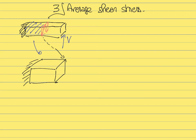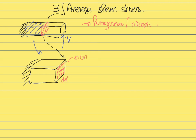Looking at the detail of what happens at the interface, every point of the interface will be transmitting a small force. Again, assuming the material is homogeneous and isotropic, and that the cross-section is far away from the points where the external load is applied, we can assume that those small shear forces dV are uniform — the same throughout the entire cross-section.